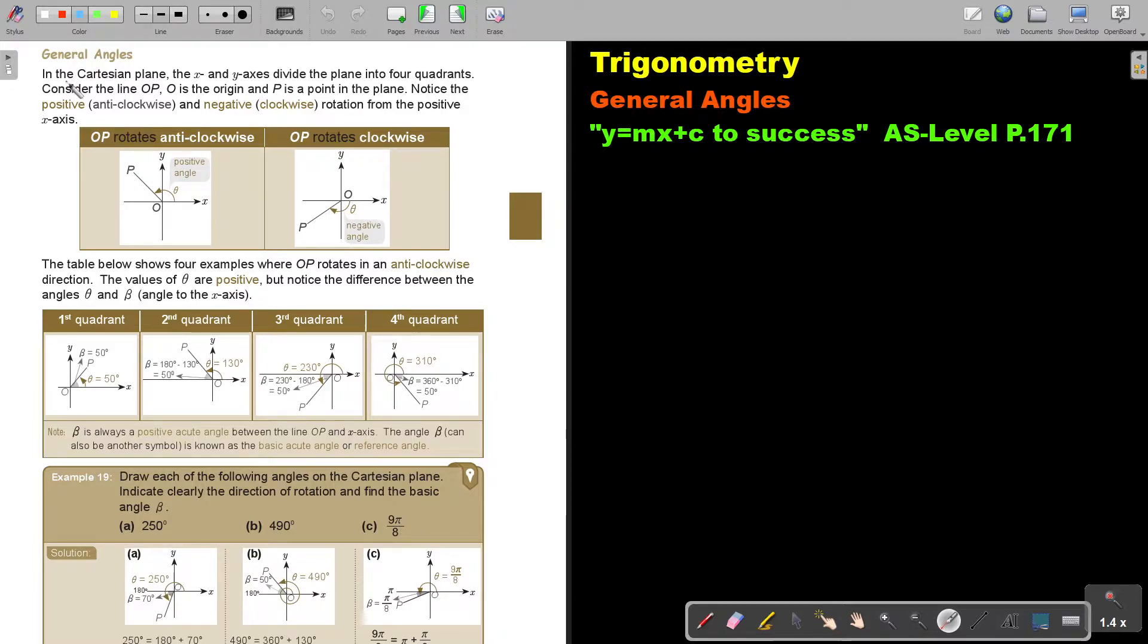General angles. In the Cartesian plane, the X and the Y axes divide the plane into four quadrants. Consider the line OP, O is the origin, P is the point on the plane. Notice the positive, remember it's anti-clockwise, and negative clockwise rotation from the positive X axis.